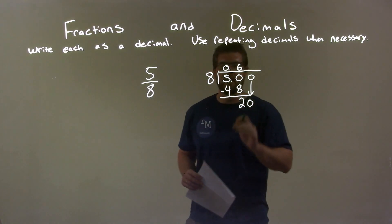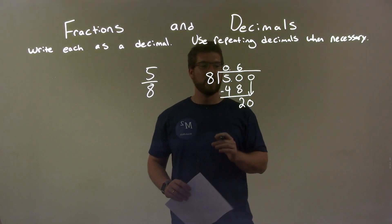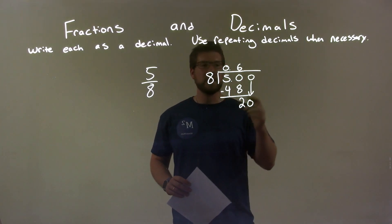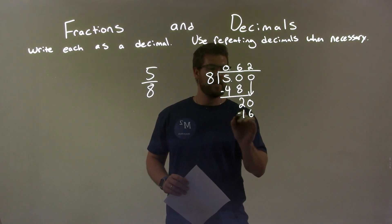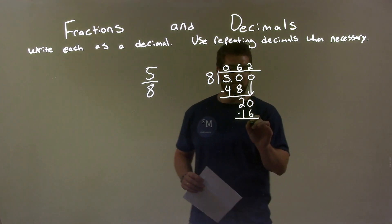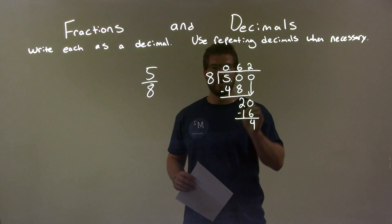Now we ask, how many times does eight go into 20? Eight goes into 20, that's two times. Two times eight is 16. We subtract that, and 20 minus 16 is four.